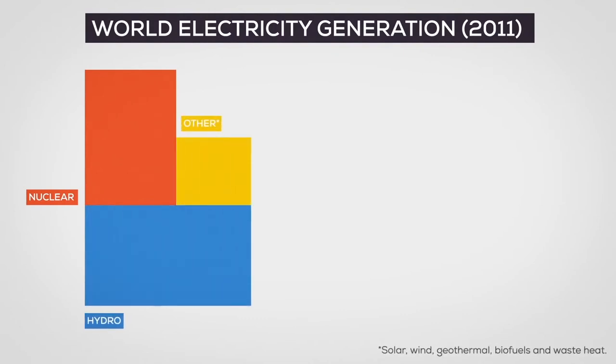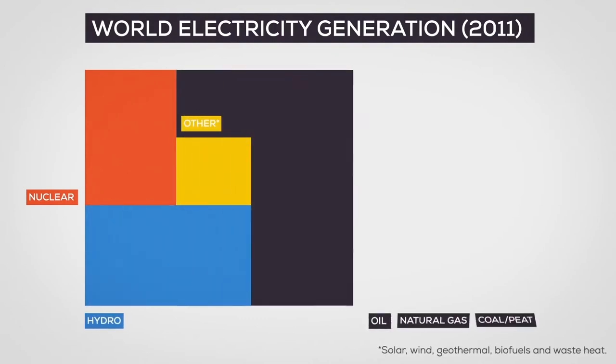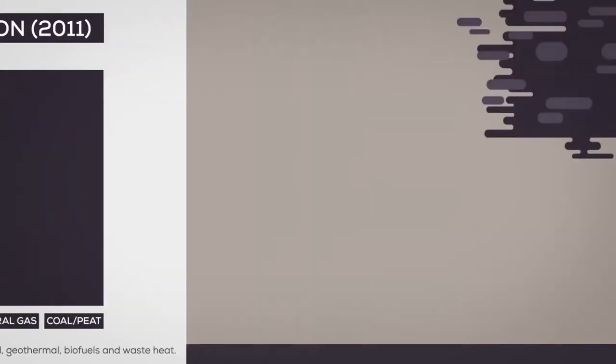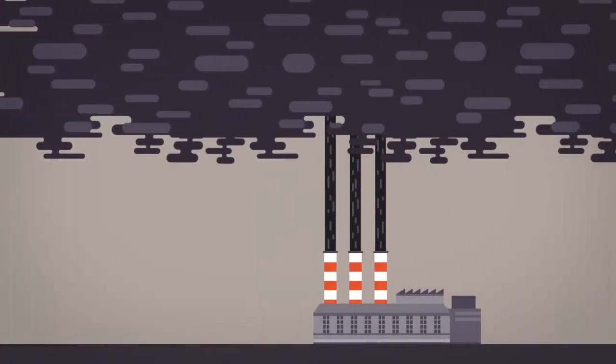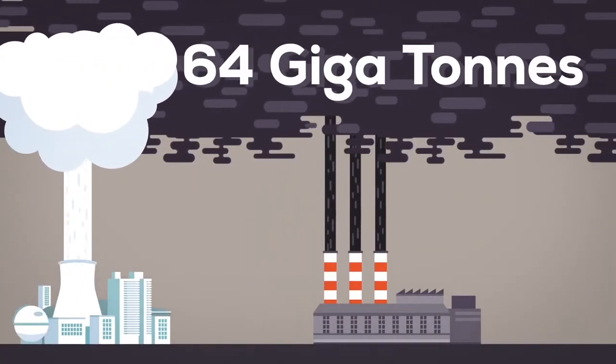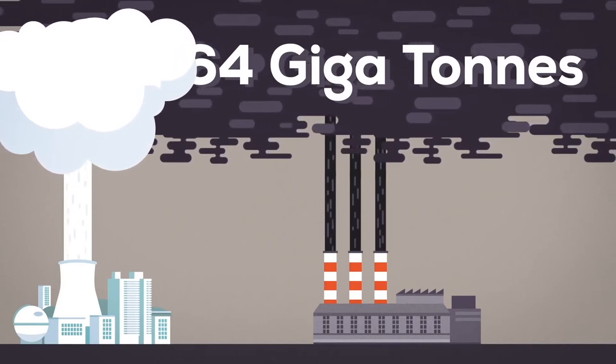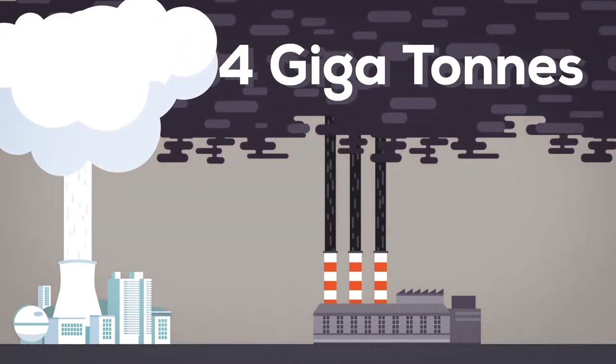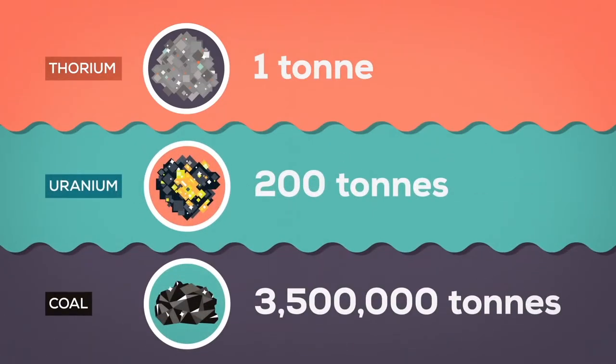Nuclear harms the climate much less than fossil fuels, which is our main energy source. Since 1976, about 64 gigatons of greenhouse gas have not been emitted all thanks to nuclear energy. And the same amount of energy produced by 200 tons of uranium equals 3.5 million tons of coal.